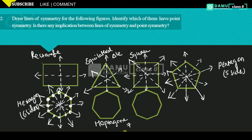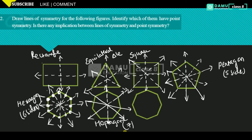Heptagon — how many? Seven sides. So: one, then here, then here. We will get seven lines of symmetry. So, to draw here: from here, two opposite ones — one in the middle, then here, then middle, then here. How many are done? Five are done.